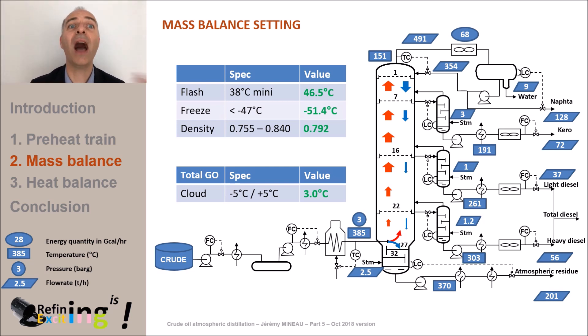And that's how we arbitrate the quantities of naphtha, kerosene, and diesel. Of course, should we treat a different crude, the flow rates would be different, since the yields in naphtha, kerosene, and diesel highly depend on the crude nature itself.